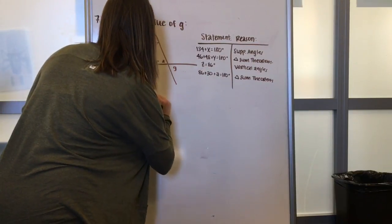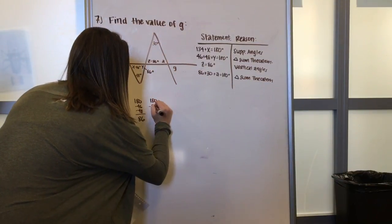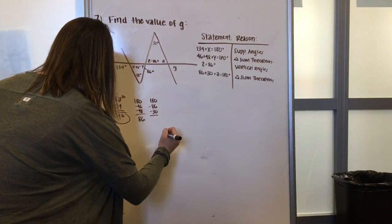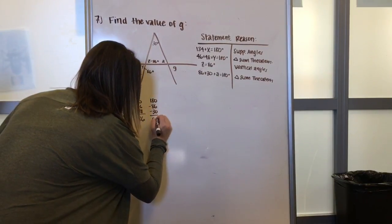Upon simplifying, we will see that a is equal to 64 degrees.